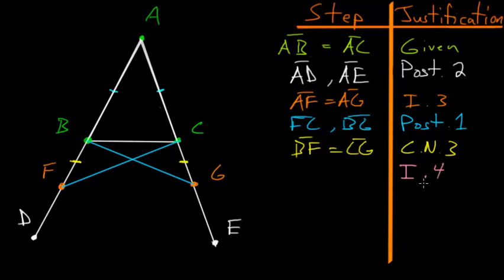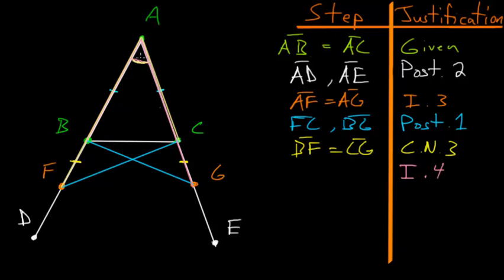The main step is to use Book 1, Postulate 4 — essentially the side-angle-side theorem — which states that if two triangles have two equal sides with equal angles between those sides, the triangles are exactly equal. Focusing on triangle ABG and triangle ACF: in the first triangle we have AB and AG; in the second, AF equals AG and AC equals AB, and the angle between them is the same angle, so triangle ABG equals triangle ACF.